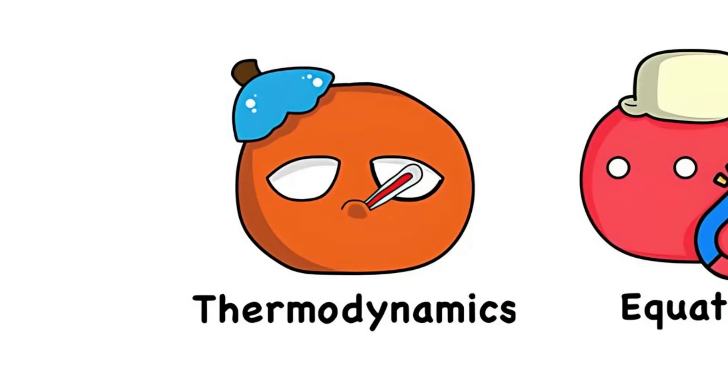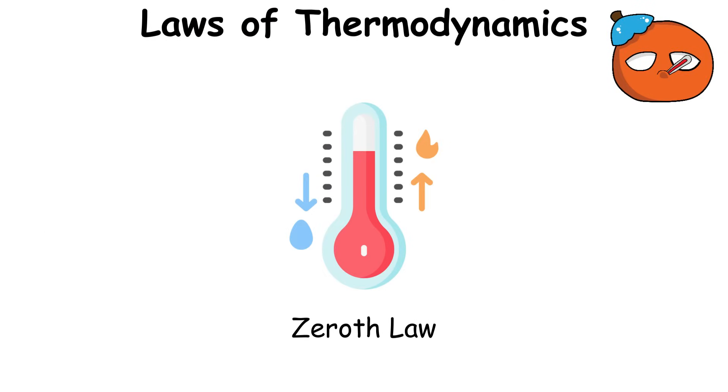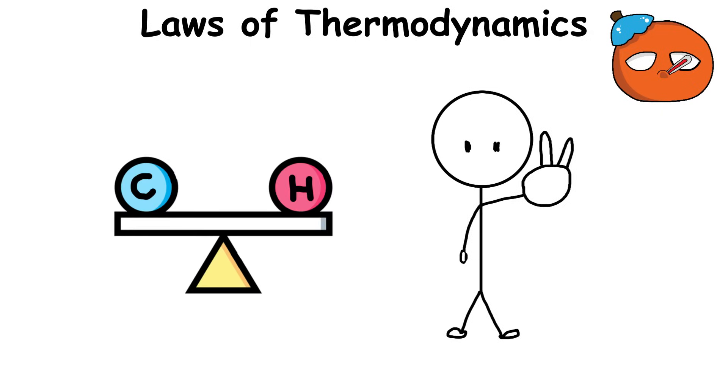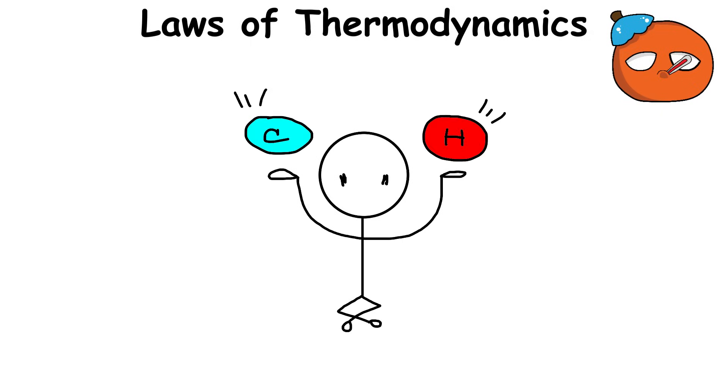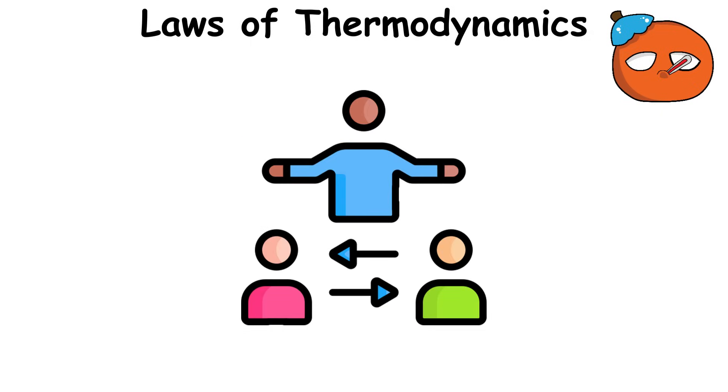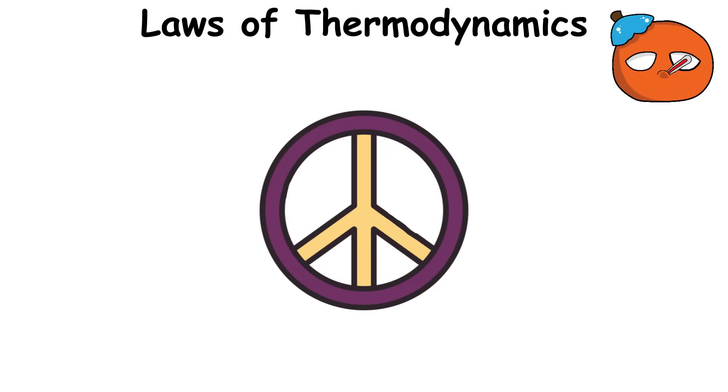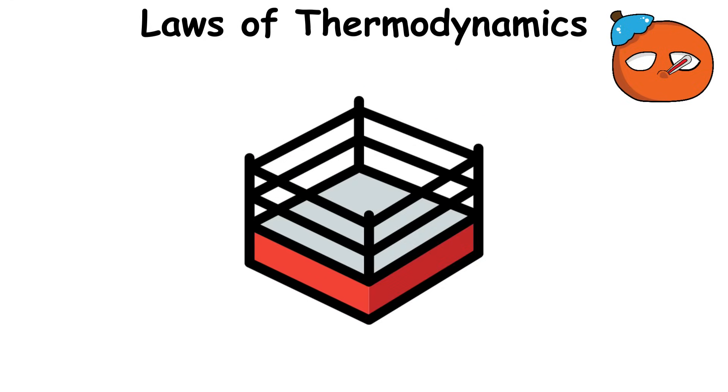The Laws of Thermodynamics. First, the zeroth law says, if two things are in thermal equilibrium with a third thing, they're in equilibrium with each other. It's the ultimate mediator between two different systems with different thermal readings. It keeps the peace between two temperatures in a proverbial boxing ring.